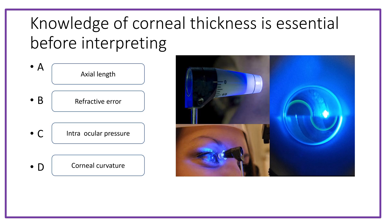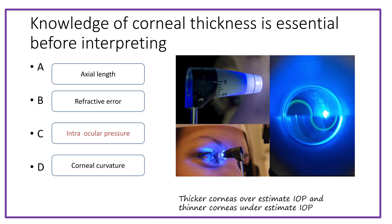Next question: knowledge of corneal thickness is essential before interpreting which of the following? Option A: axial length; option B: refractive error; option C: intraocular pressure; option D: corneal curvature. The answer is intraocular pressure, because there is a strong relationship between corneal thickness and IOP. A higher corneal thickness can overestimate the IOP, and a thinner cornea tends to underestimate the IOP.